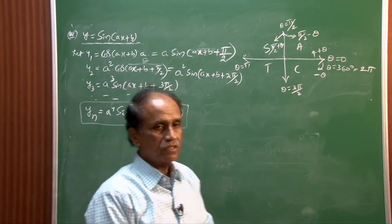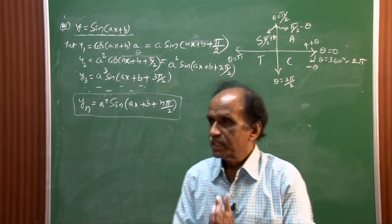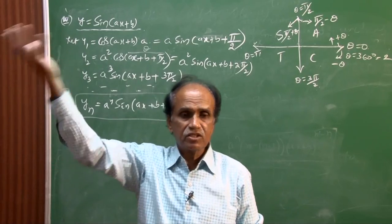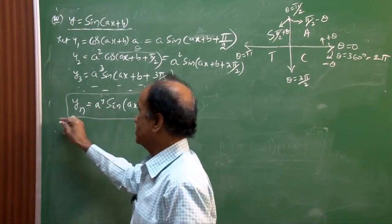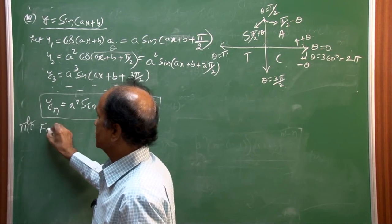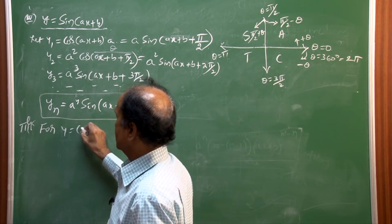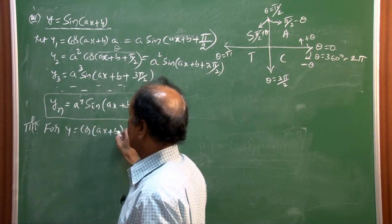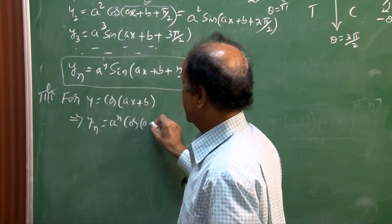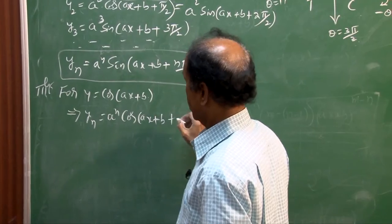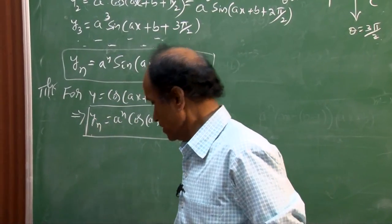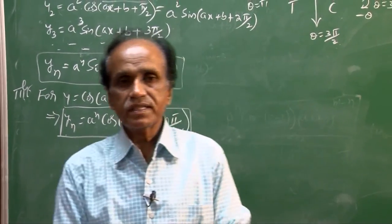Result 5 (left as homework): y = cos(ax + b) gives yₙ = aⁿ · cos(ax + b + nπ/2). Two trigonometric functions are handled — sine and cosine — using this pattern of adding π/2 at each differentiation step.